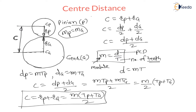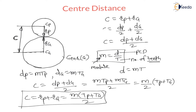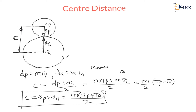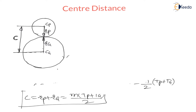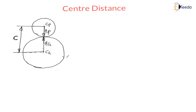The second point we need to understand is velocity ratio. Velocity ratio is also called speed ratio.